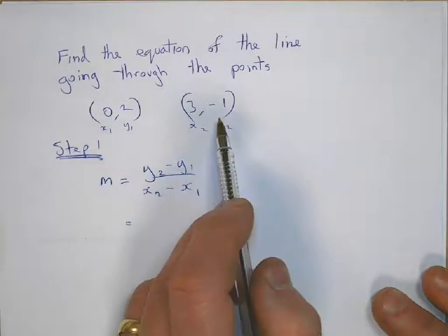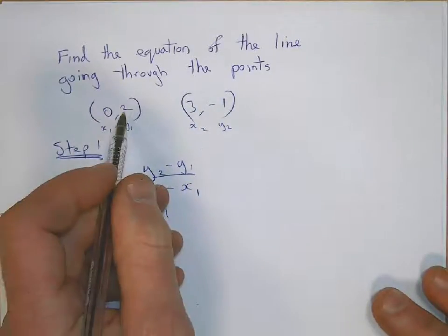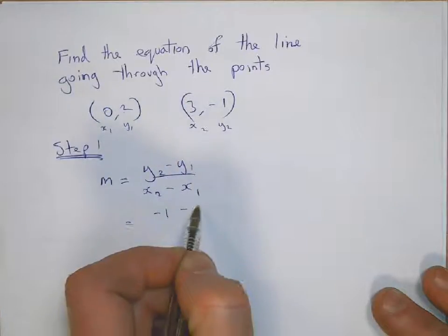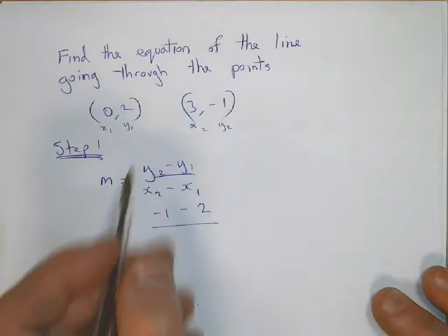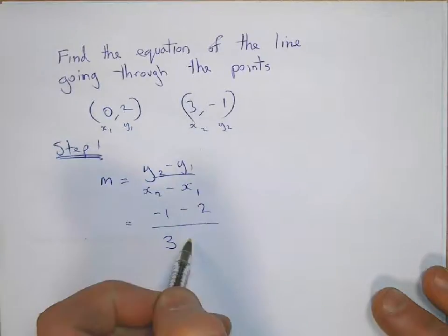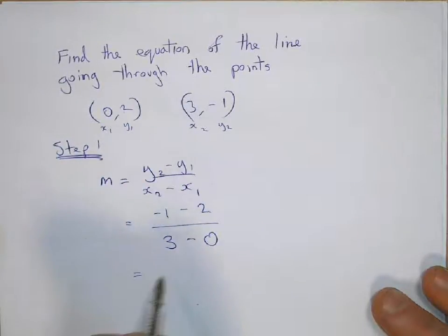y2 is minus one, y1 is you're taking away two there, x2 is three and then we're taking away the zero, which gives us minus three over three and that can simplify just to minus one.